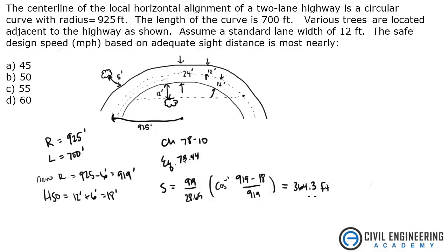Now that we know the stopping sight distance that we calculated, we can use this value and use table 78.2 from the Civil Engineering Reference Manual, an AASHTO table for minimum stopping sight distances on level roadways. The closest for 364 is actually listed as 359.8 feet. If you follow that to the left, it lists a design speed of 45 miles per hour.